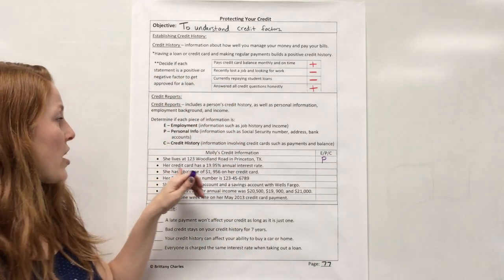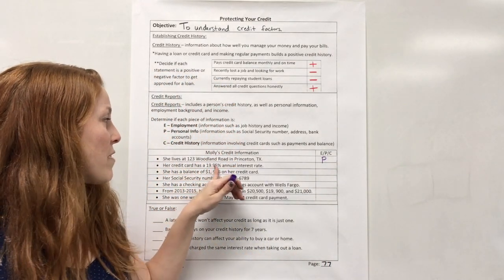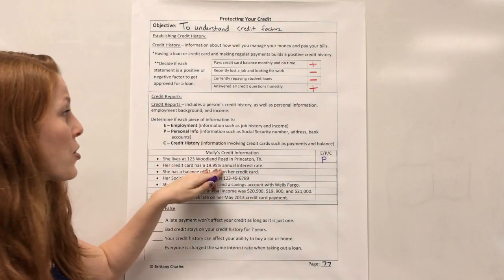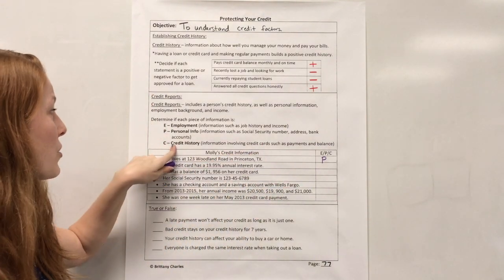All right. Her credit card has 19.95% annual interest rate. Well, that's about her credit card. So that would go with credit history.